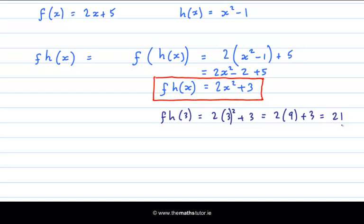Let's try and write a general function for h after f. h of f of x. This time we're going to get h of the result of f of x. So f of x gets substituted into h of x. That is the output of f of x, which is 2x plus 5. So we square 2x plus 5 and take away 1, because that's what h does.